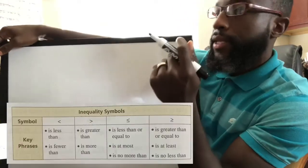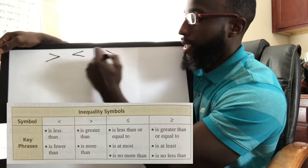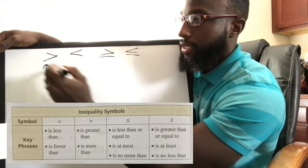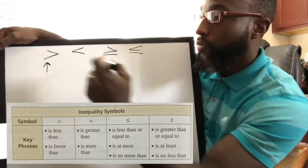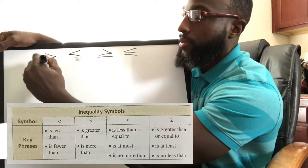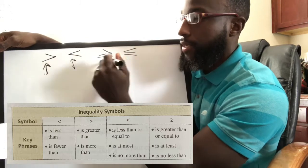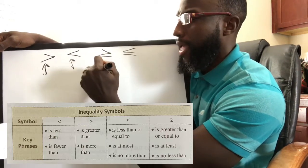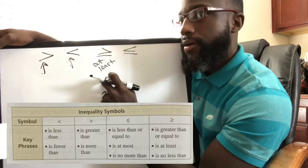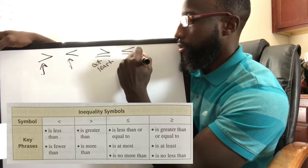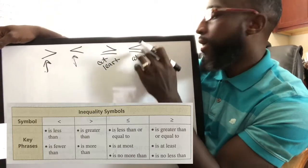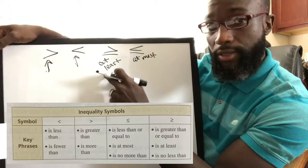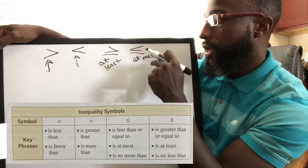These inequality symbols represent specific language. Less than means fewer than in a word problem. Greater than means more than. Greater than or equal to means at least — it starts at that value and goes bigger. Less than or equal to means at most — it can be equal to or less than that value.